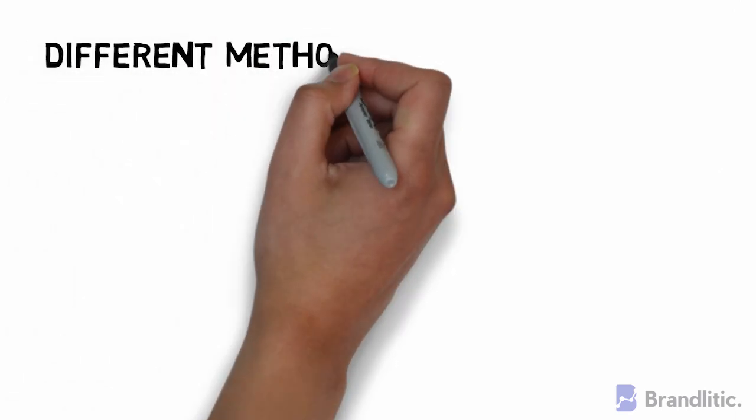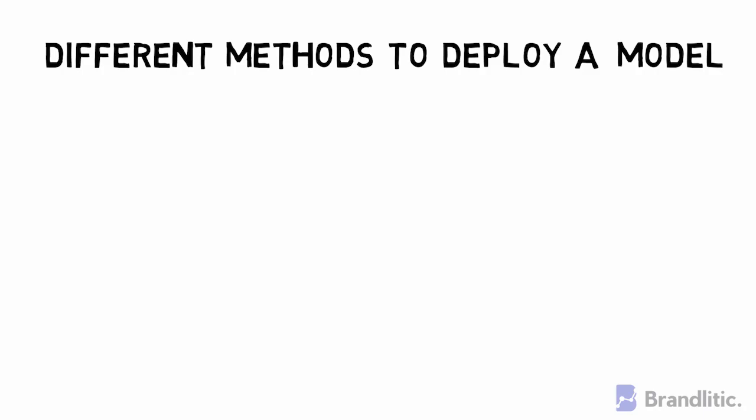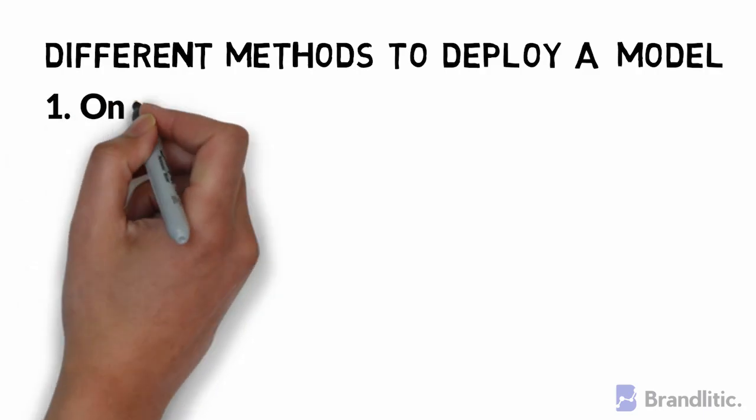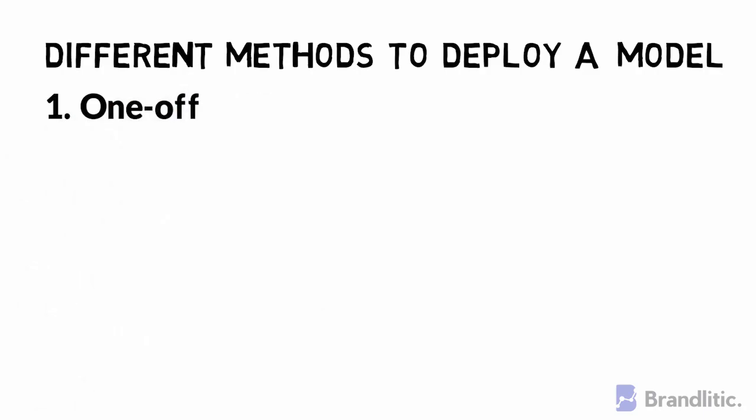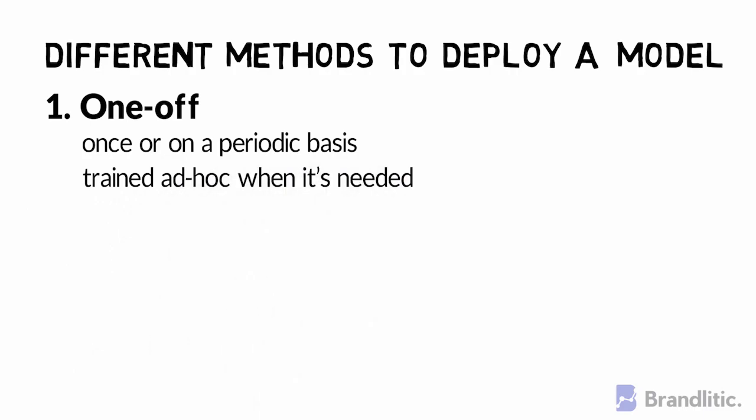What are the different methods to deploy your model? There are three general ways to deploy your ML models. First, One-off — it's not always necessary to continuously train an ML model for it to be deployed. Sometimes a model is only needed once or on a periodic basis. In this case, the model can simply be trained ad-hoc when it's needed and pushed to production until it degrades enough to need some fixing.